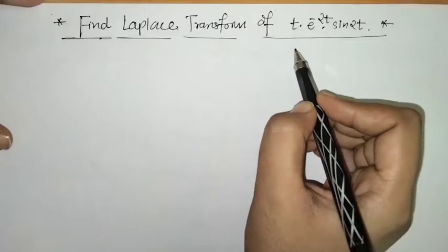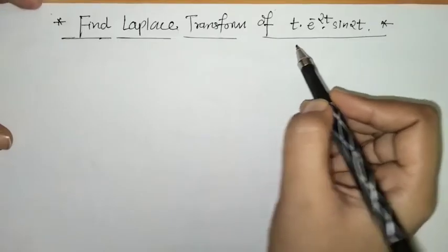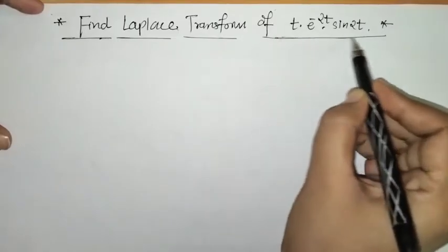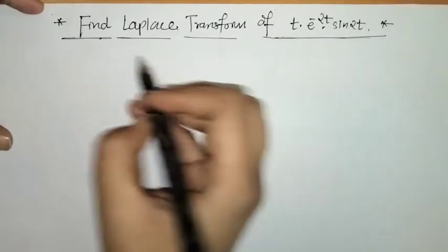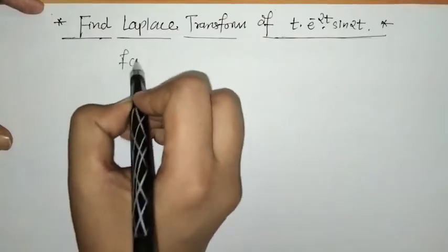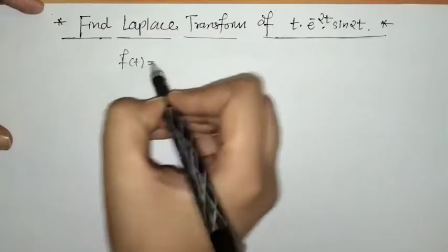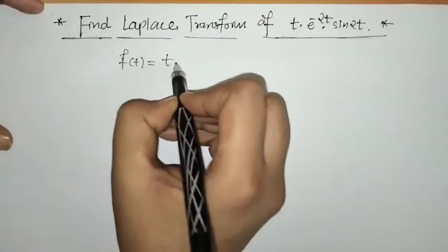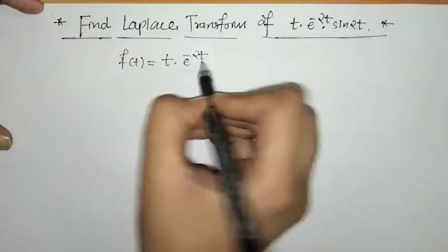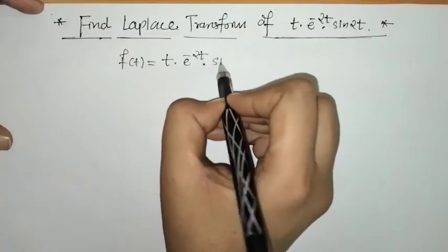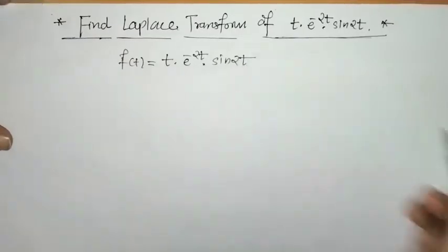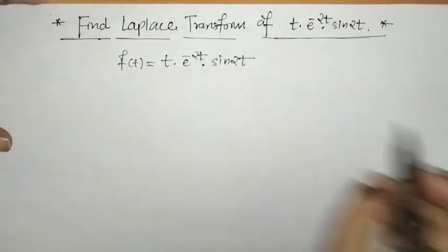Hello everyone, welcome to Unlock Maths. Today we have to find the Laplace of this function. Here we have given f(t) = t · e^(-2t) · sin(2t).